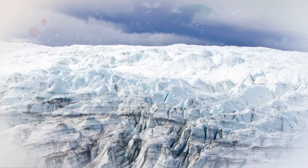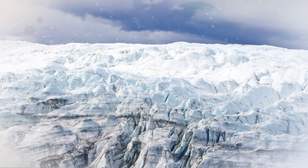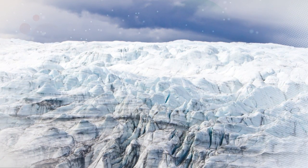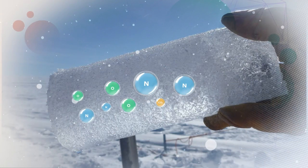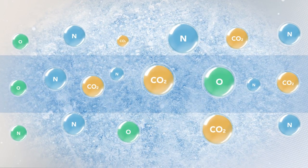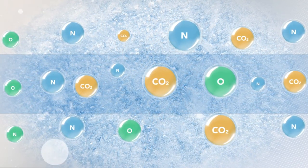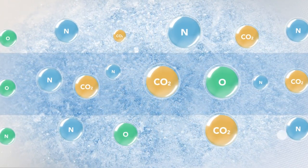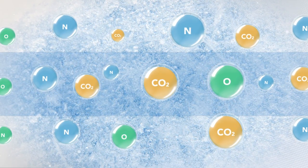Thus, these tree rings are a proxy for water availability or precipitation. In ice sheets and glaciers, there are several proxies that tell us about past climate. Cores of ice contain air bubbles that are time capsules of the Earth's past atmosphere. In these bubbles, scientists measure the amount of carbon dioxide from layer to layer.